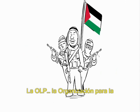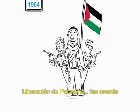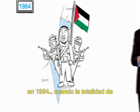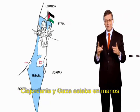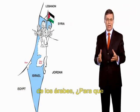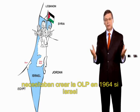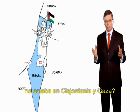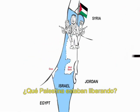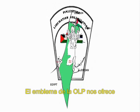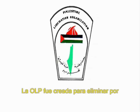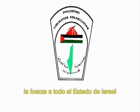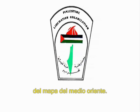The PLO — the Palestinian Liberation Organization — was created in 1964, when the entire West Bank and Gaza was in Arab hands. Why create the PLO in 1964, when Israel had no presence in the West Bank and Gaza? What Palestine were they liberating? The PLO emblem gives us the answer: the PLO was created to remove by force the entire state of Israel from the map of the Middle East.